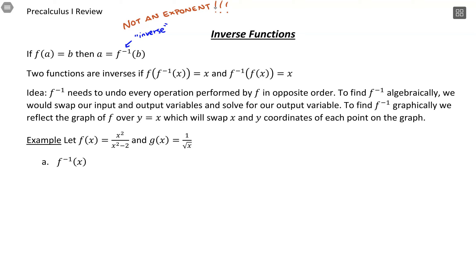A way to check your inverse functions is using composite functions. If you take f of the inverse function of x, there's a cancellation that happens and you're just left with your variable. The same thing happens when you flip it around — you're just left with your variable when you compose them together.